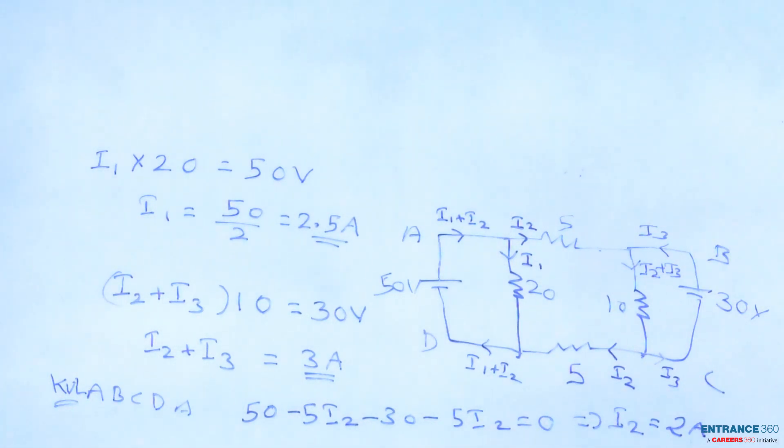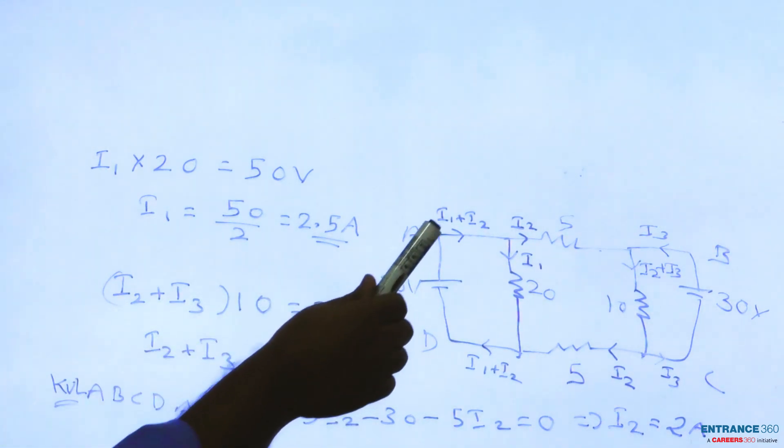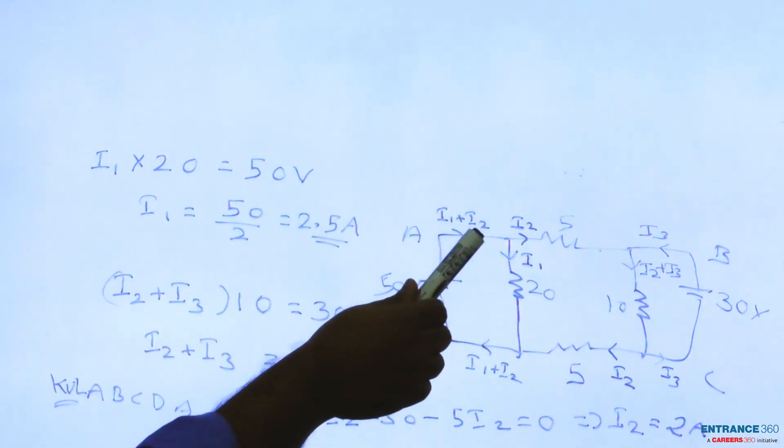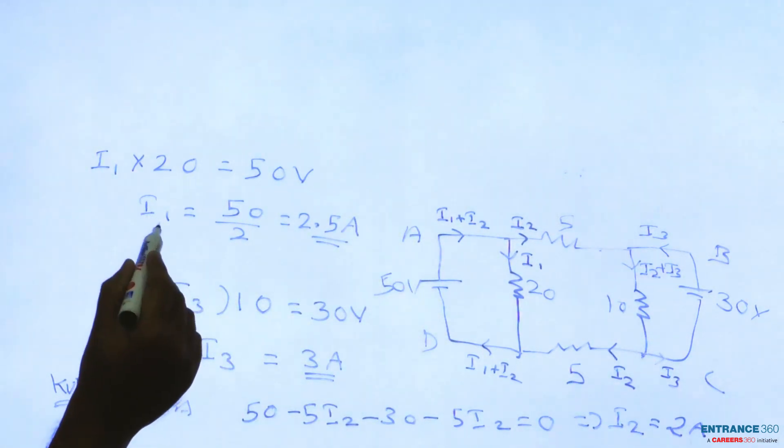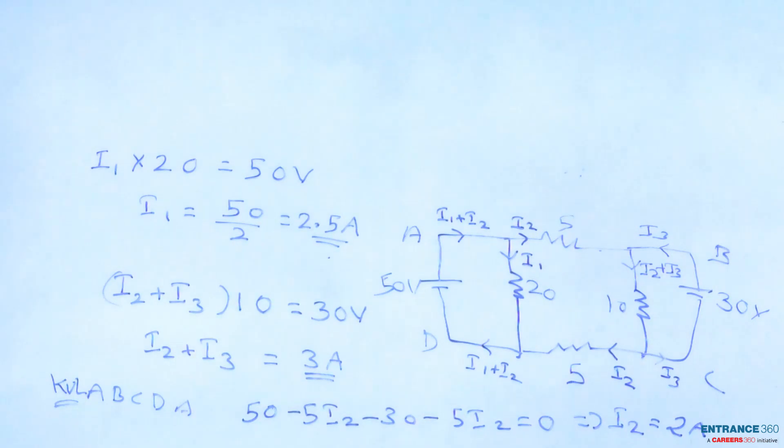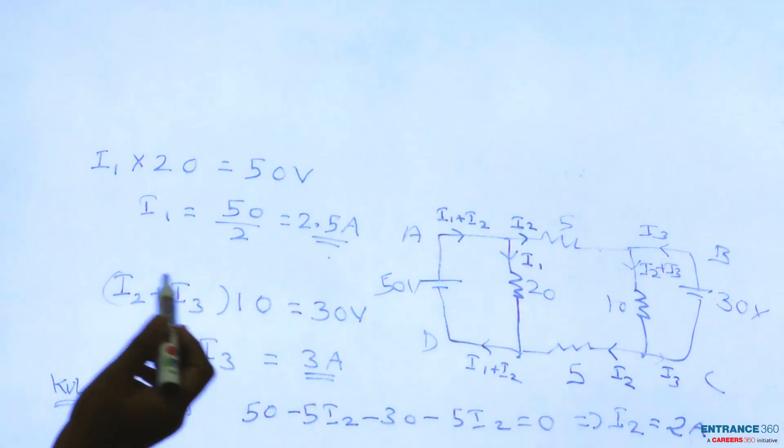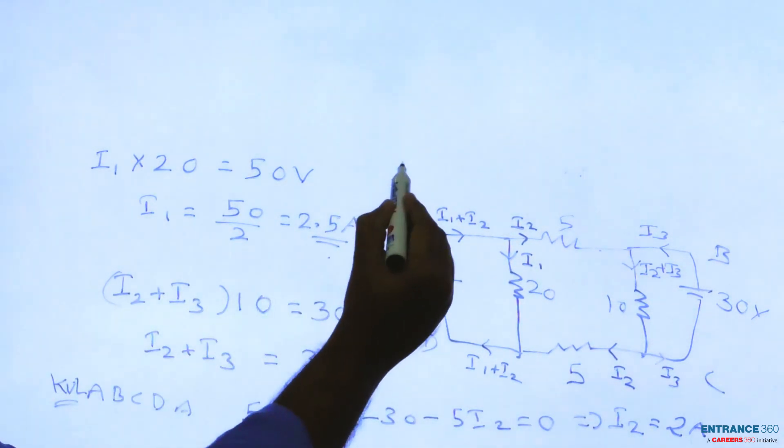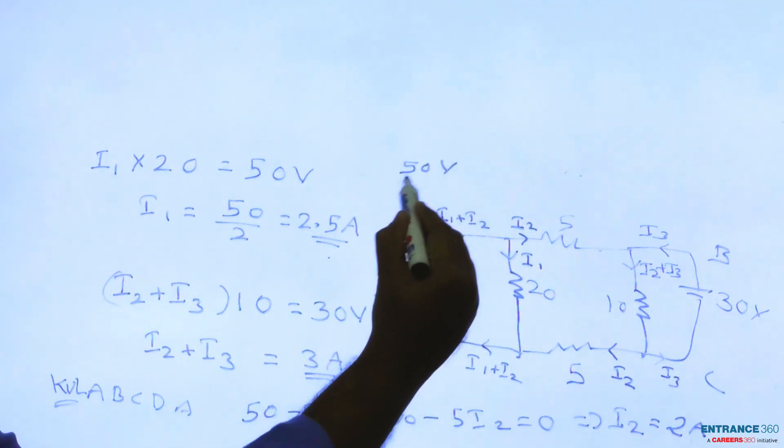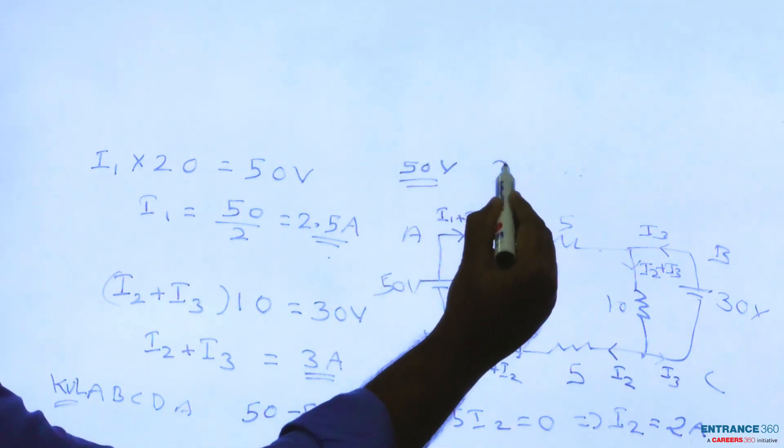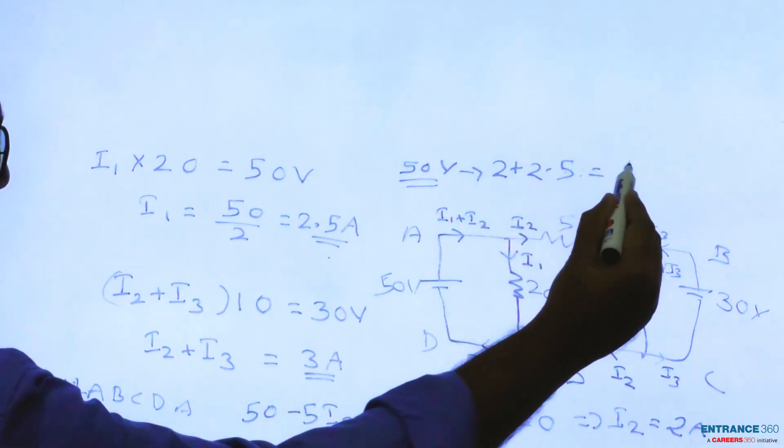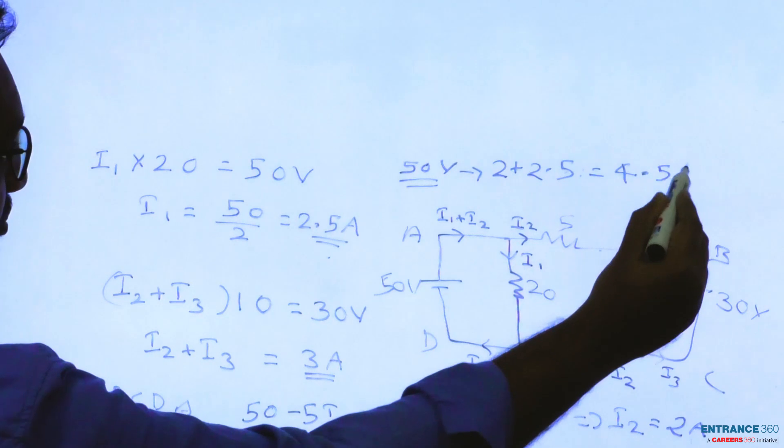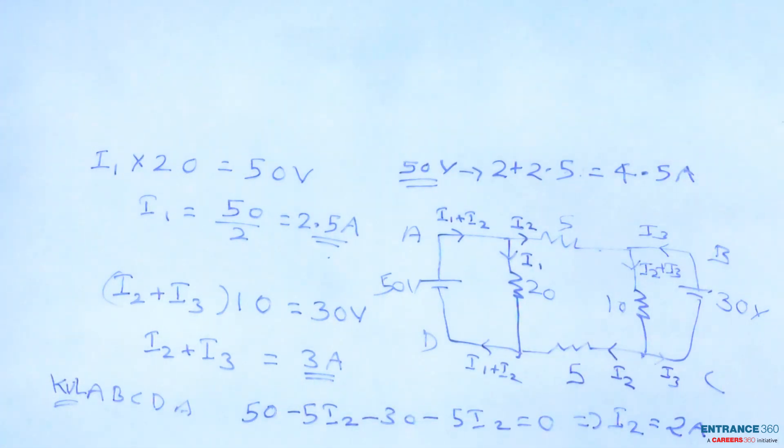So current flowing through I1, current through the 50 volt battery is I1 plus I2. So we have I1 equals 2.5 ampere, I2 equals 2 ampere, so current through 50 volt will be 2 plus 2.5, which equals 4.5 ampere.